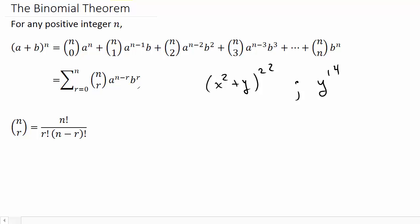So we know n, which in this case is n is 22. A is this term, which is x squared. B, this term, is y. We want y to the 14th. Well, you see these exponents here. That tells us what r is. So in this case, r is 14.